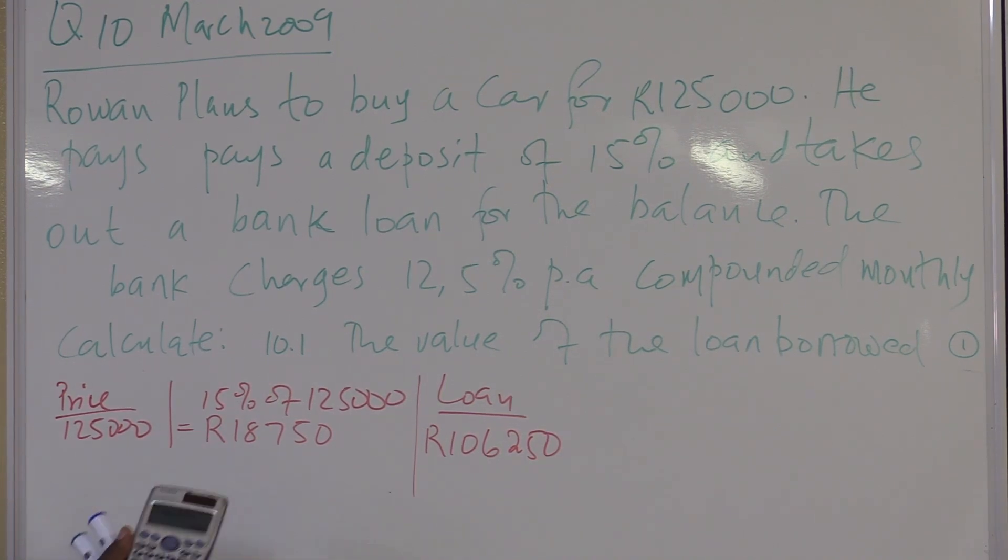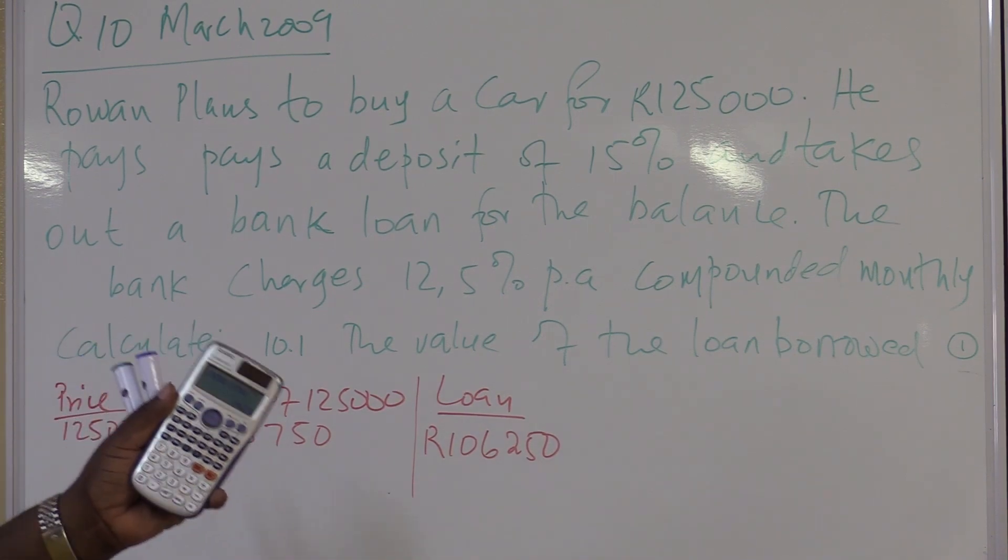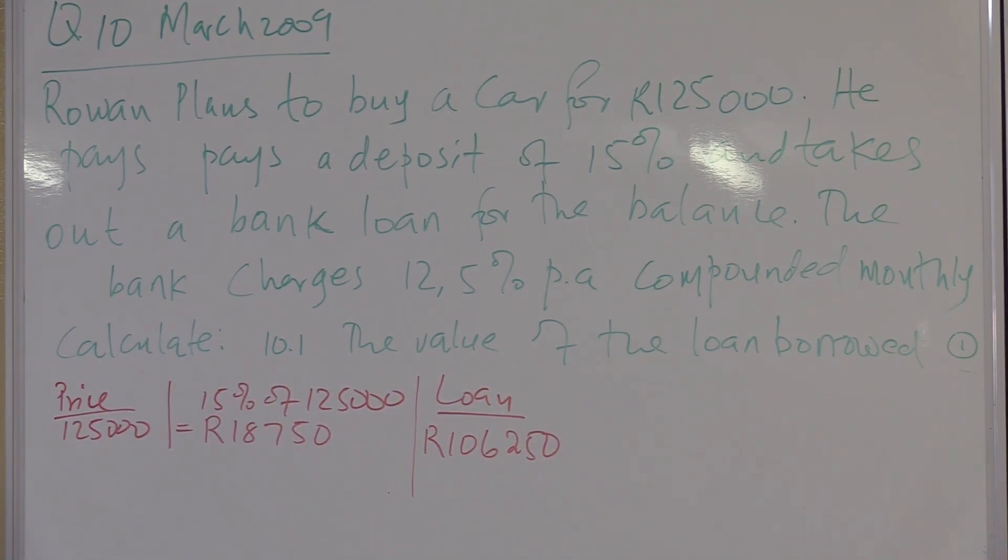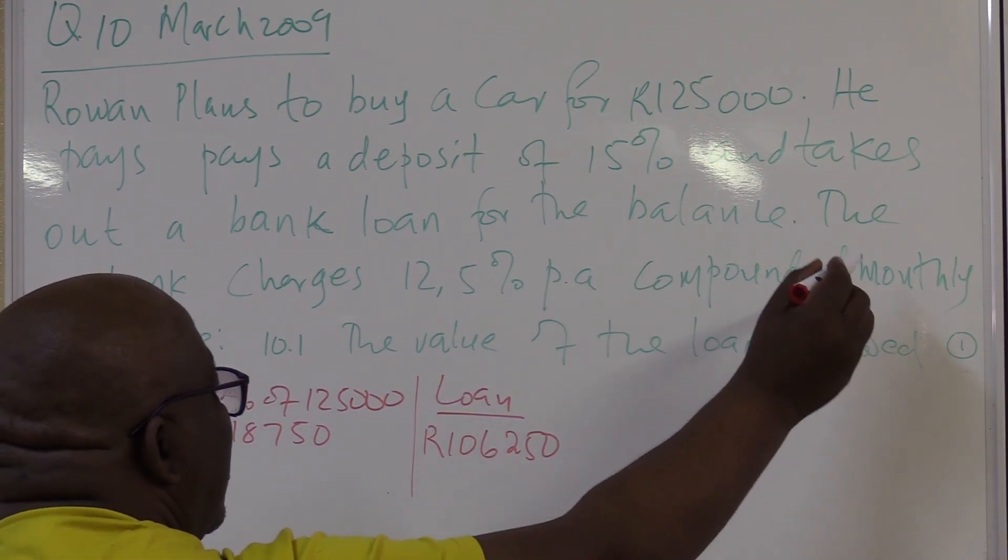So the loan that he owes the bank will be $106,250. The car was worth $125,000. He paid a deposit of $18,750. So this is what he takes out as the loan. And takes out the bank loan for the balance. The bank charges, there comes I. The bank charges 12.5% per annum compounded monthly. That becomes important.